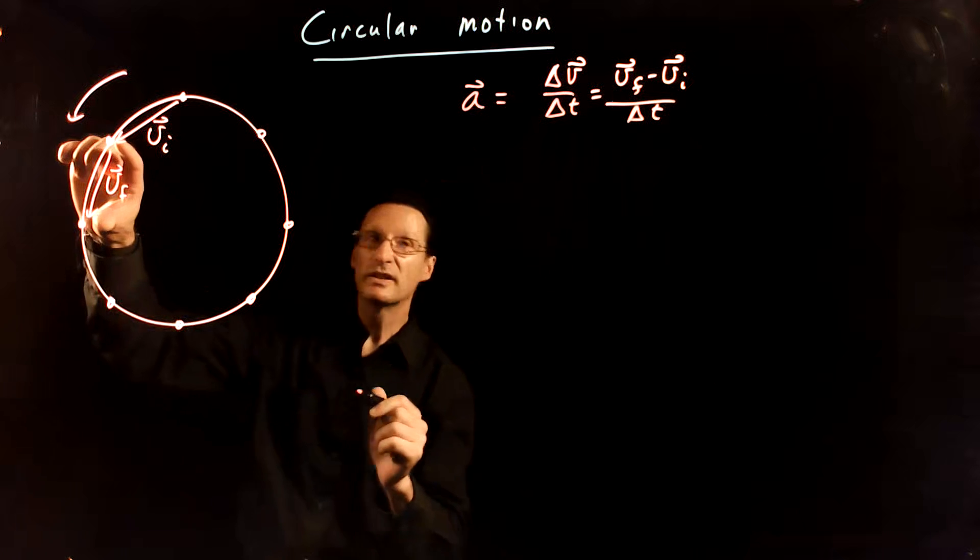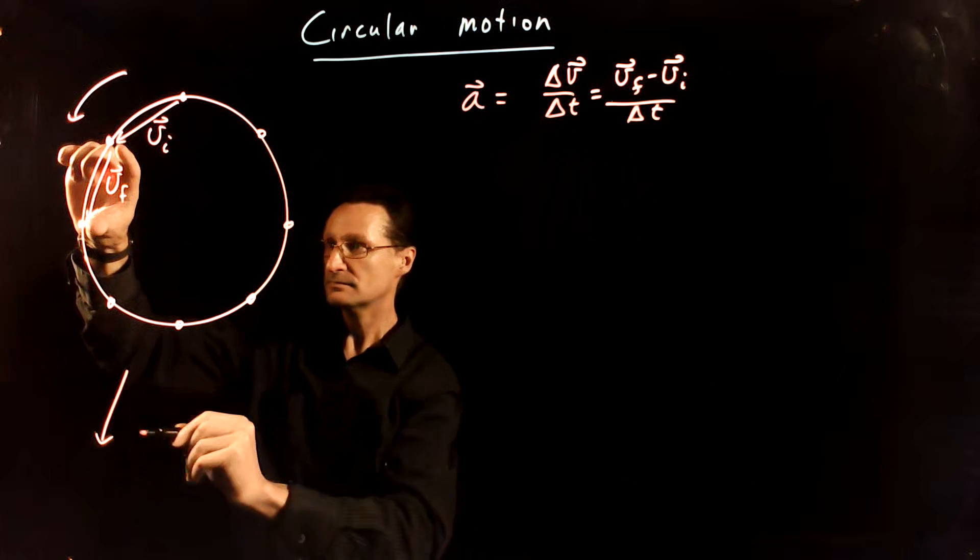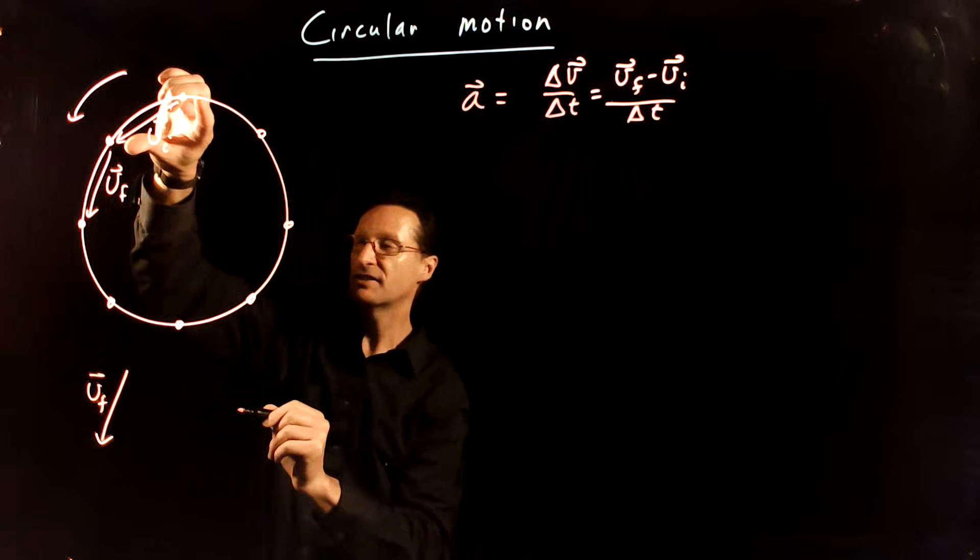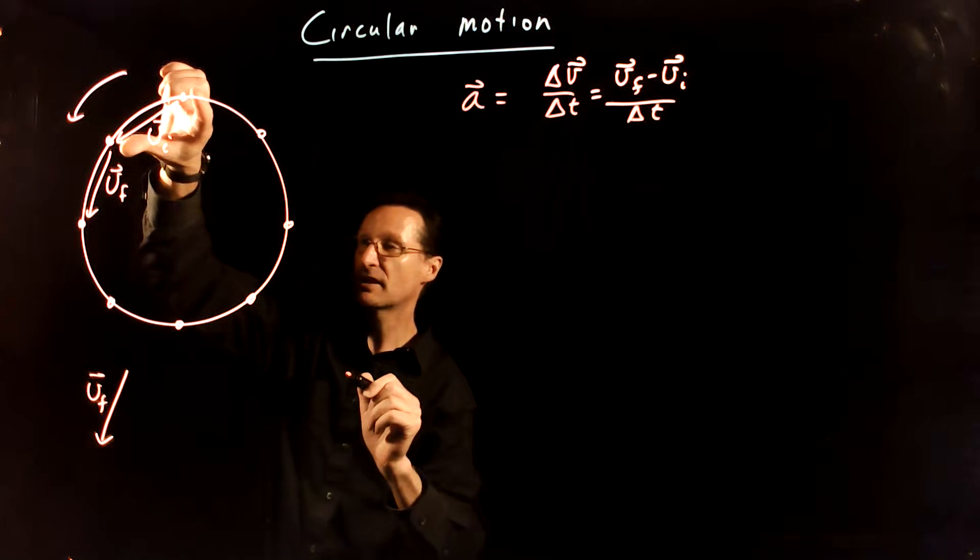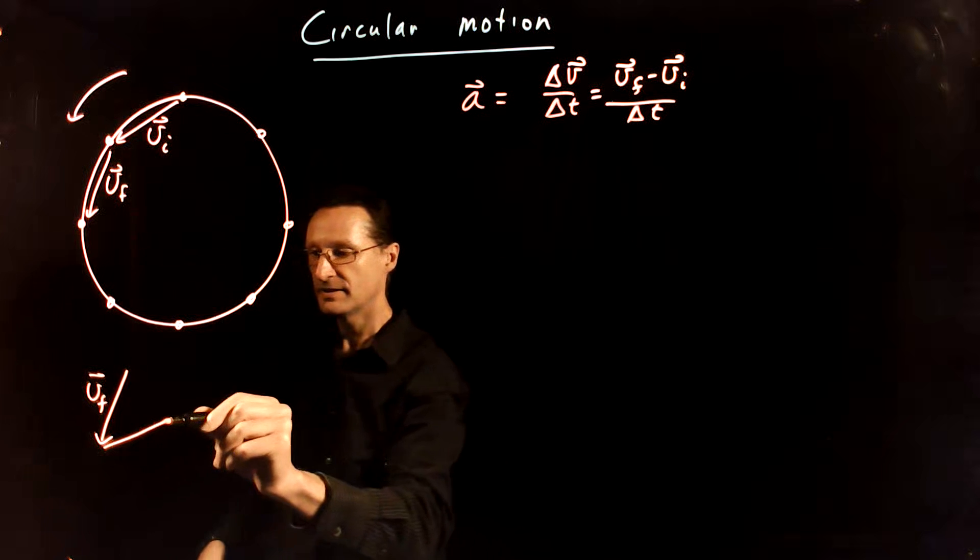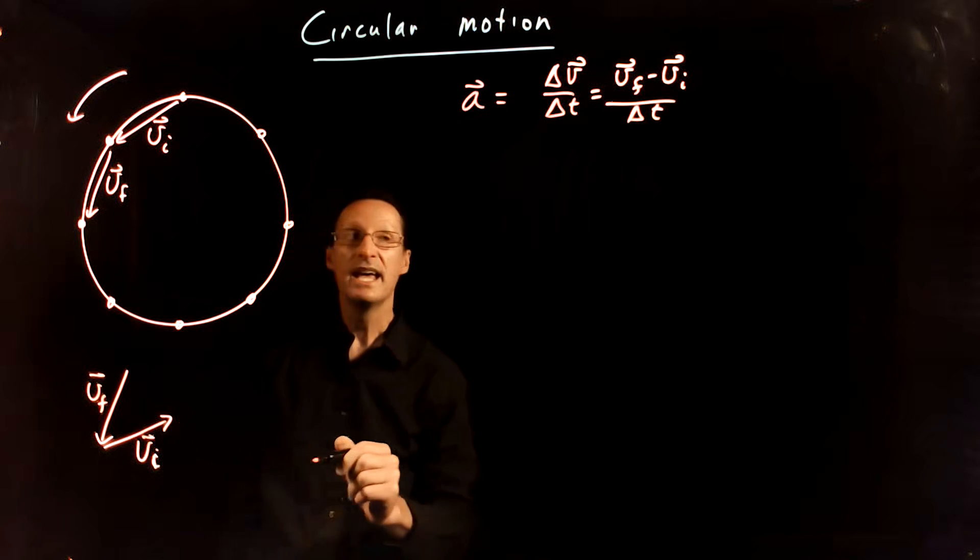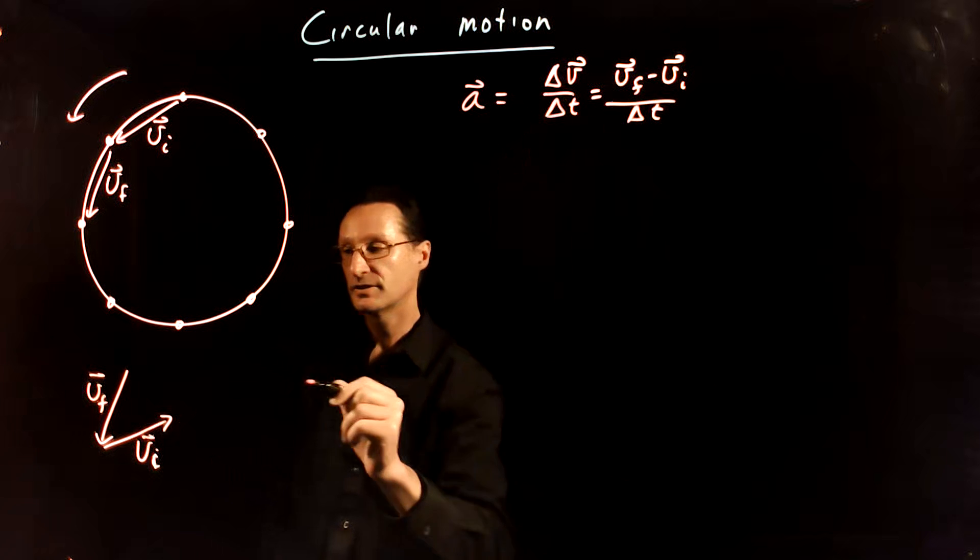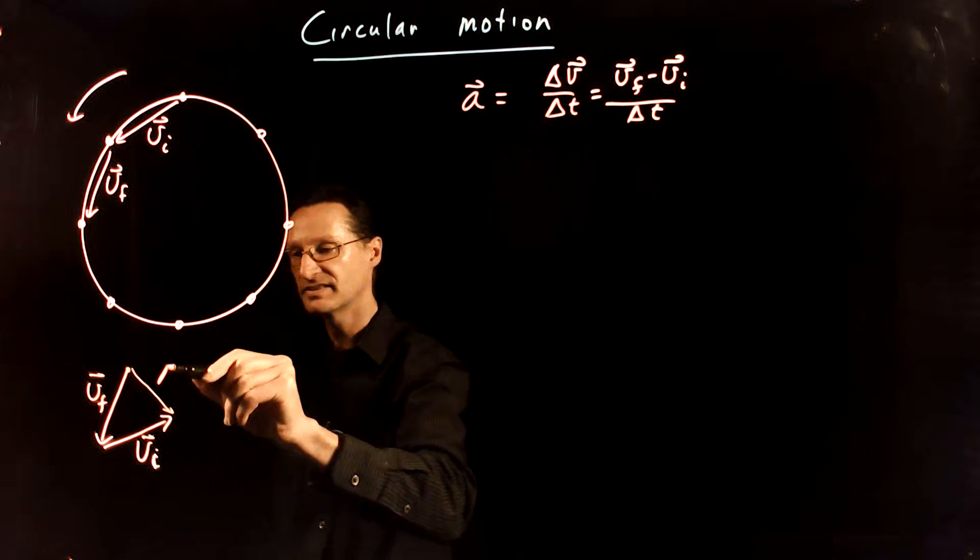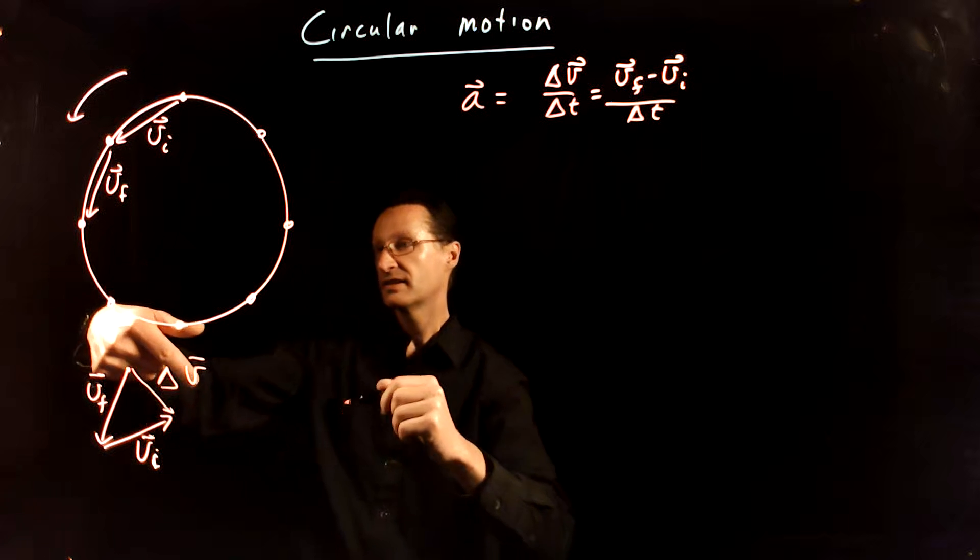So we want to take v final minus v initial. So let me just take v final here and draw that there. And then I want to take v initial, but I need negative v initial. So I'm going to flip the direction and then put that at the end of v final. So this is delta v as a vector.